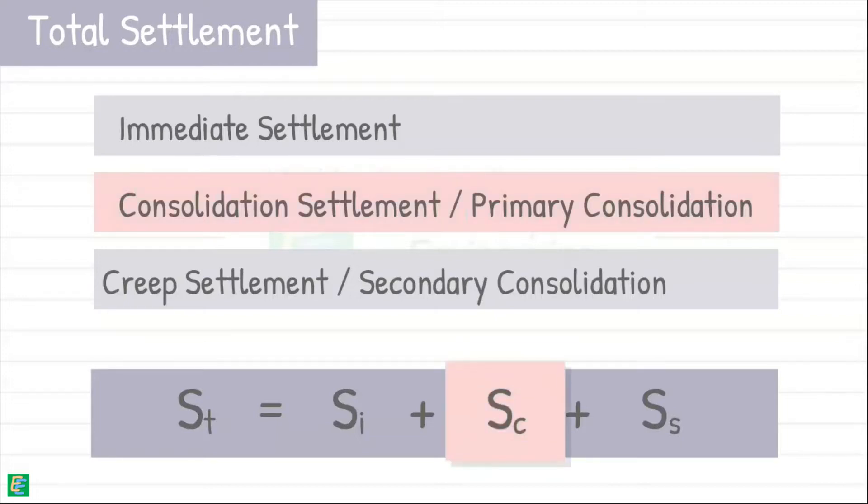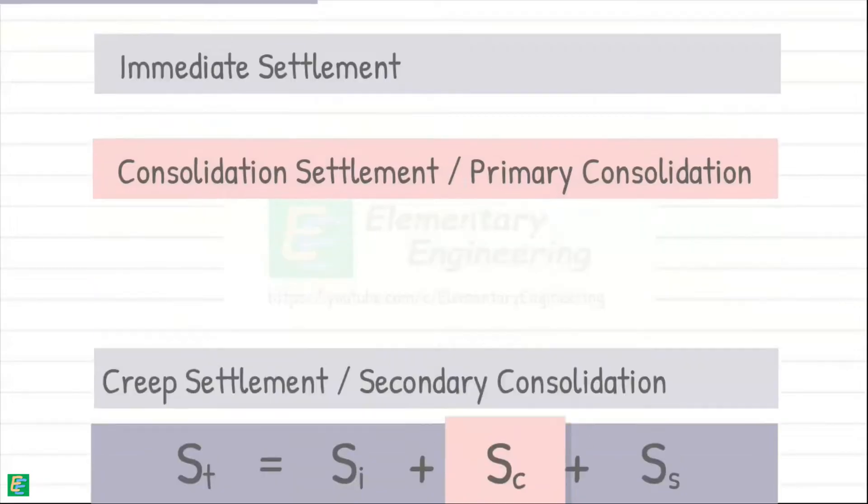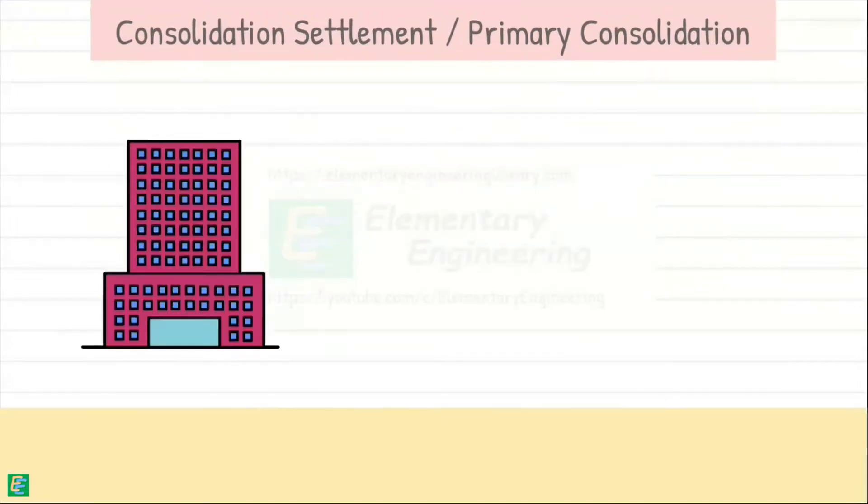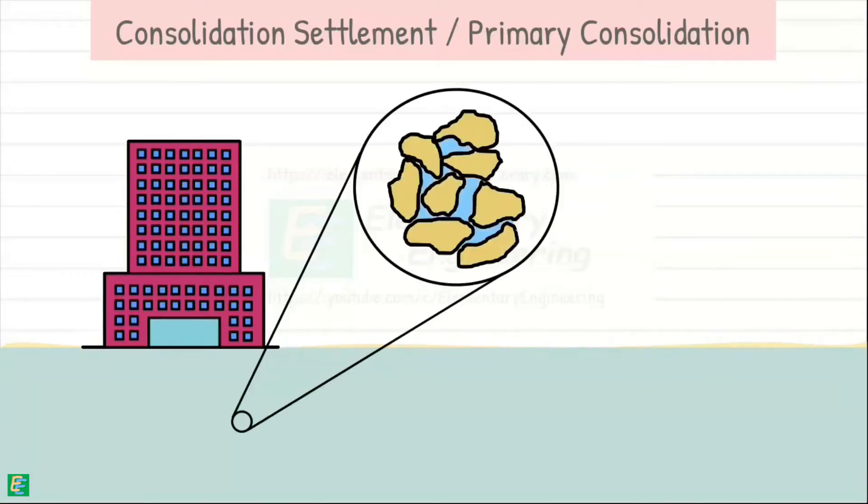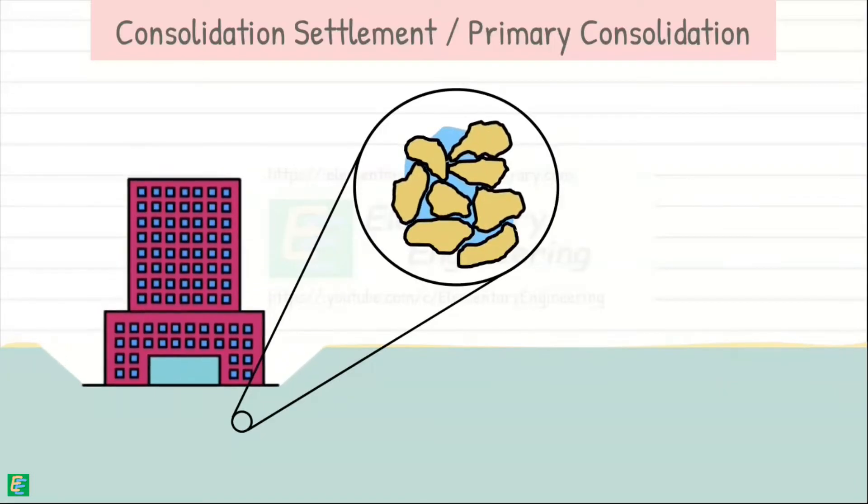Consolidation settlement is the most dominant factor of the total settlement. It refers to the settlement of soil that occurs because applied load causes the rearrangement of soil particles and dissipation of excess pore water pressure in saturated soils.